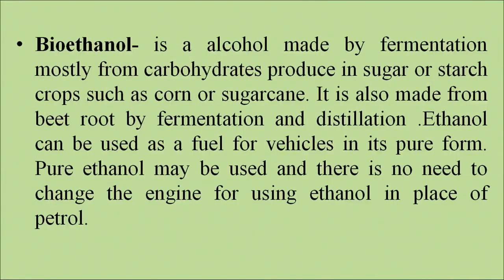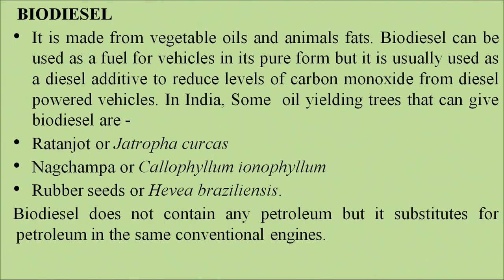Bioethanol is an alcohol made by fermentation of carbohydrates produced in sugar and starch crops such as corn and sugarcane. It is also made from beetroot by fermentation and distillation. Ethanol can be used as a fuel for vehicles in its pure form with no need to change the engine. Biodiesel is made from vegetable oils and animal fats and can be used as a fuel for vehicles in its pure form, but is usually used as a diesel additive to reduce levels of carbon monoxide from diesel-powered vehicles. In India, oil-yielding trees that can give biodiesel include Ratanjot, Nakchampa and rubber seeds.